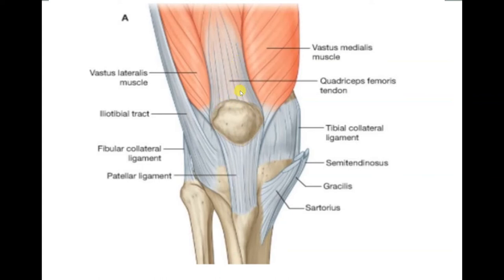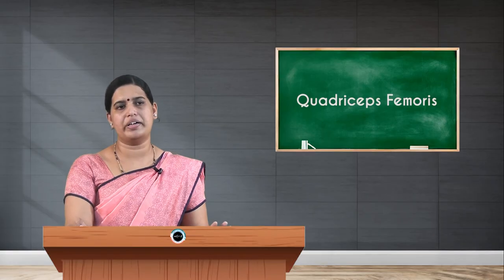At the base of the patella you can appreciate the quadriceps femoris tendon inserting — vastus medialis on the medial side, vastus lateralis on the lateral side, rectus femoris at the front, and vastus intermedius visible only after cutting rectus femoris. All four together form the quadriceps femoris. From the apex of the patella, a ligament runs down to the tibial tuberosity — this is called the patellar ligament or ligamentum patellae.